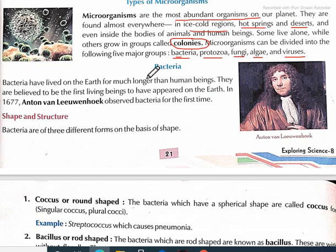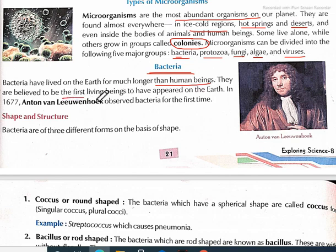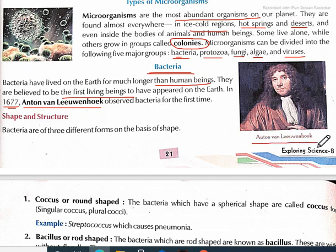First we will discuss bacteria. Bacteria have lived on the earth for much longer than human beings — bacteria were there first. They are believed to be the first living beings to have appeared on earth. In 1677, Anton van Leeuwenhoek observed bacteria for the first time; he discovered bacteria.